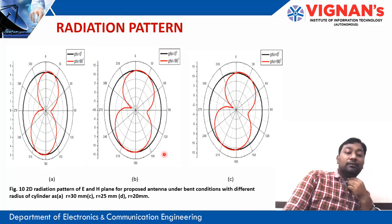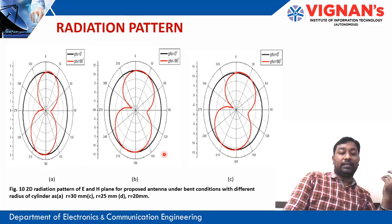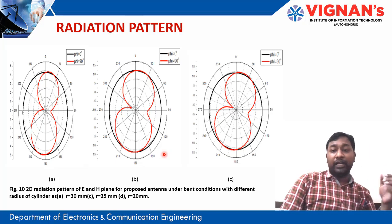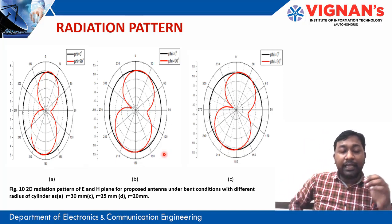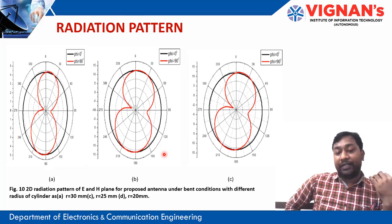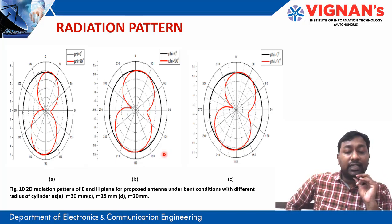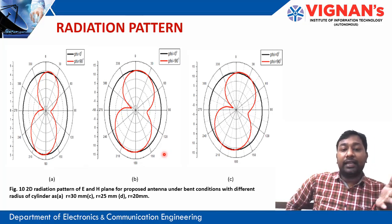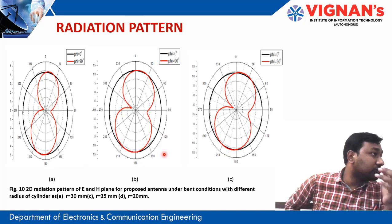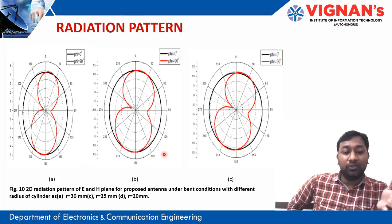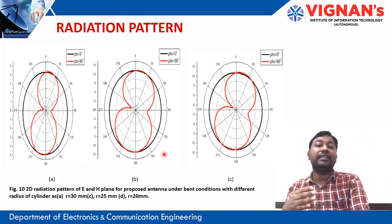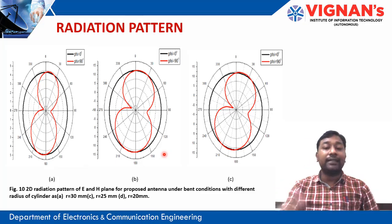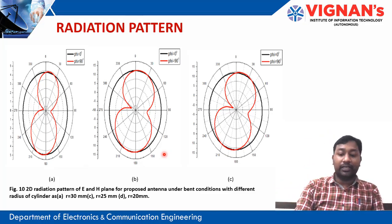For the radiation pattern, we analyze the E-plane and H-plane of the proposed antenna under bending conditions at r = 30, 25, and 20 mm. The antenna shows dipole-type radiation at phi = 0 and phi = 90 degrees. The radiation pattern is not significantly affected by bending; only slight changes occur because the dimensional variation is only 5 mm. Further bending would produce more noticeable bandwidth changes.